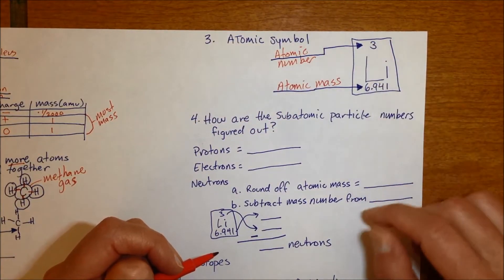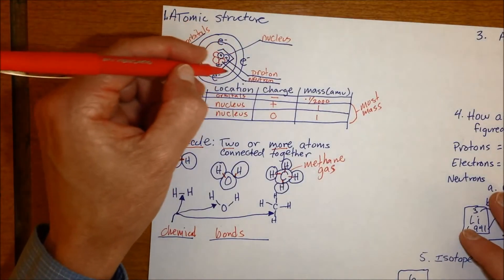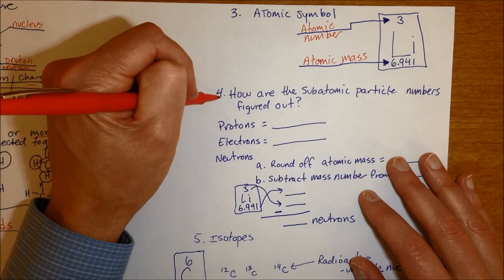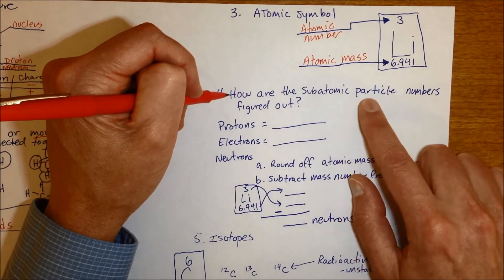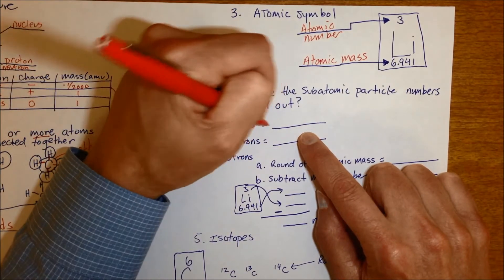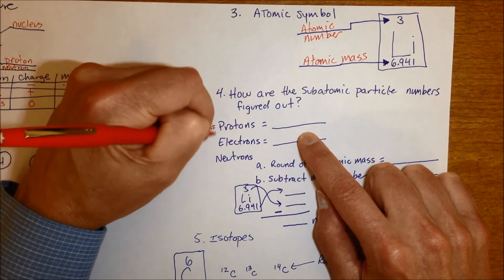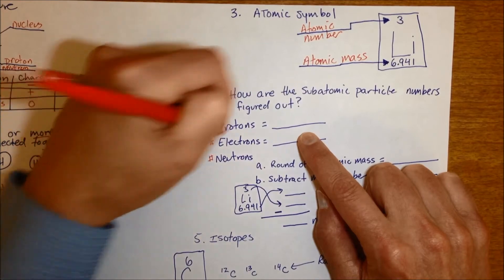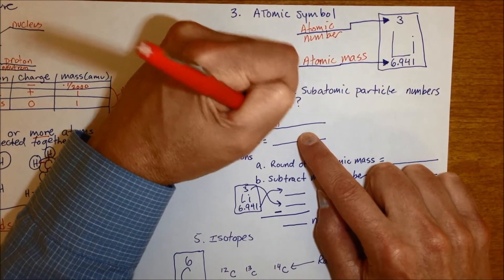Well, what those are used for, it allows us to figure out everything else about an atom, how many protons, neutrons, and electrons it has. So how do you do that? How are the subatomic particles, which are protons, neutrons, and electrons, actually figured out? Number of protons is equal to the atomic number.